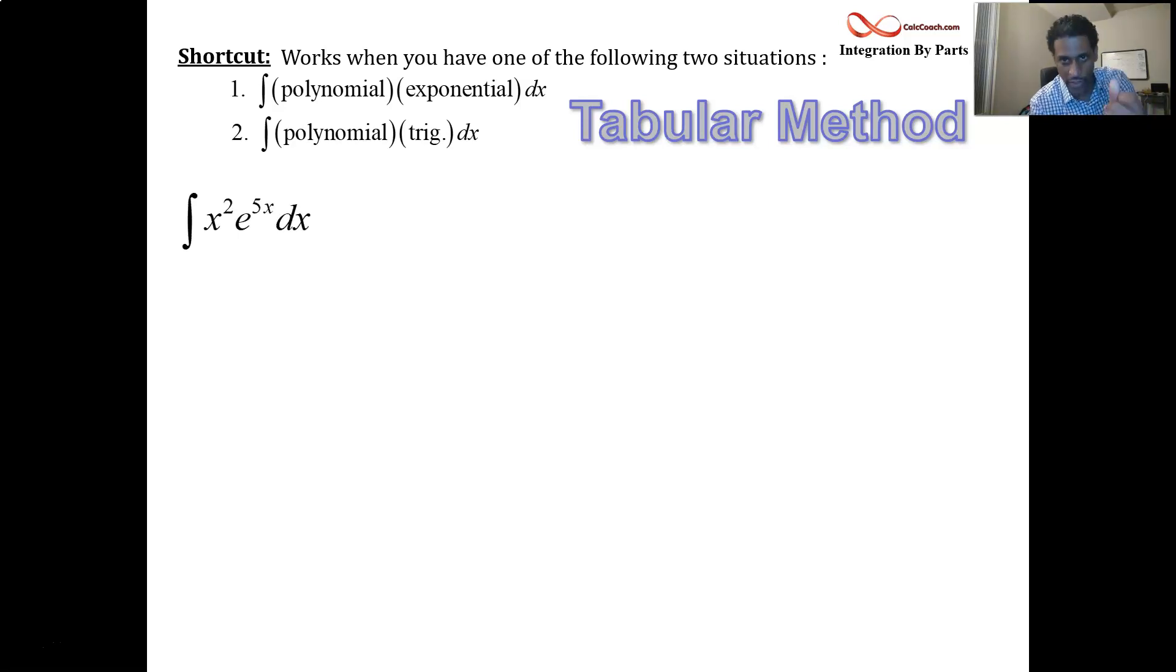Step number one, differentiate the polynomial down to zero. So we start with x squared, get 2x by one derivative, get 2 by a second derivative, and get 0 by the third derivative. Okay?